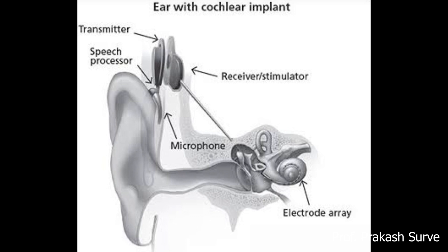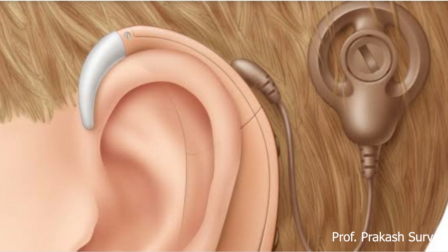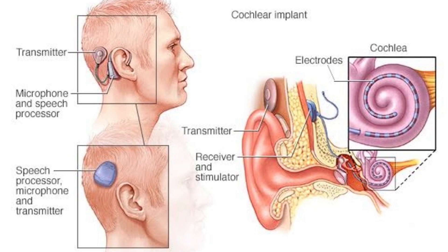A cochlear implant may help someone with hearing loss restore or improve the ability to hear and understand speech. It is a small electronic device that electrically stimulates the cochlear nerve. The implant has external and internal parts. The external part sits behind the ear, picks up sounds with a microphone, processes the sound, and transmits it to the internal part. A thin wire and small electrodes lead to the cochlea, and the wire sends the signal to the cochlear nerve, which sends sound information to the brain to produce a hearing sensation.